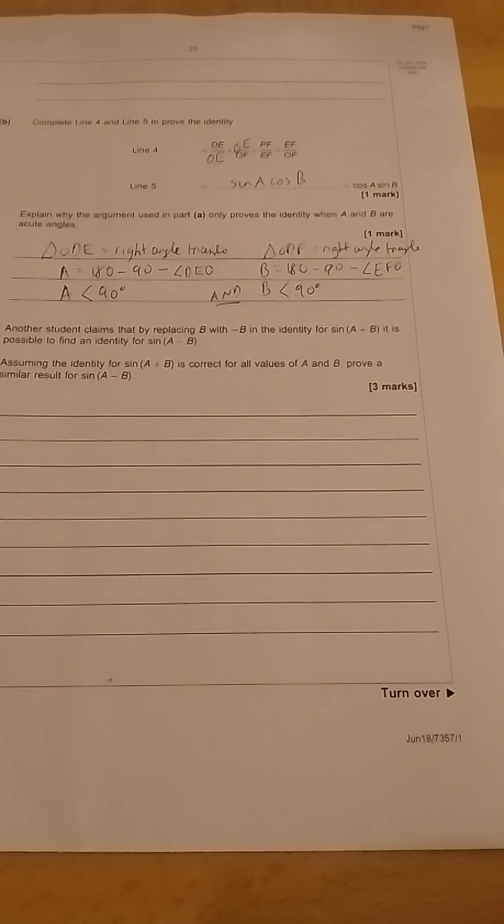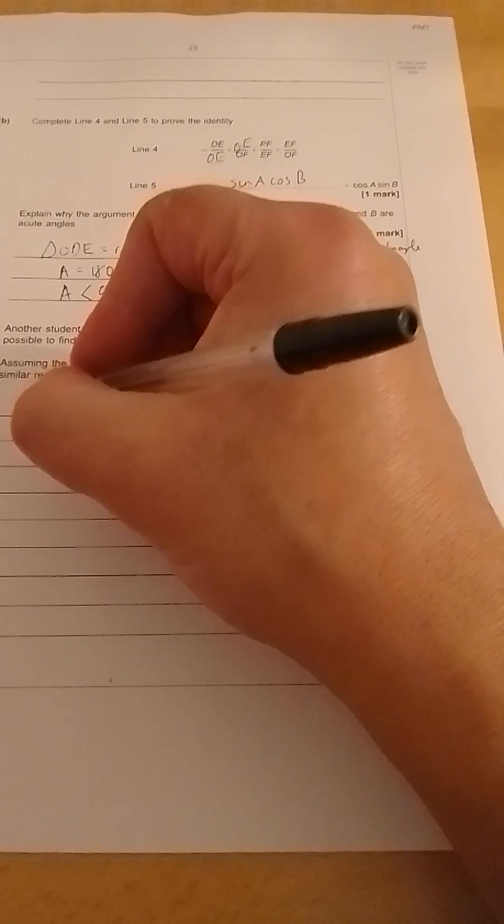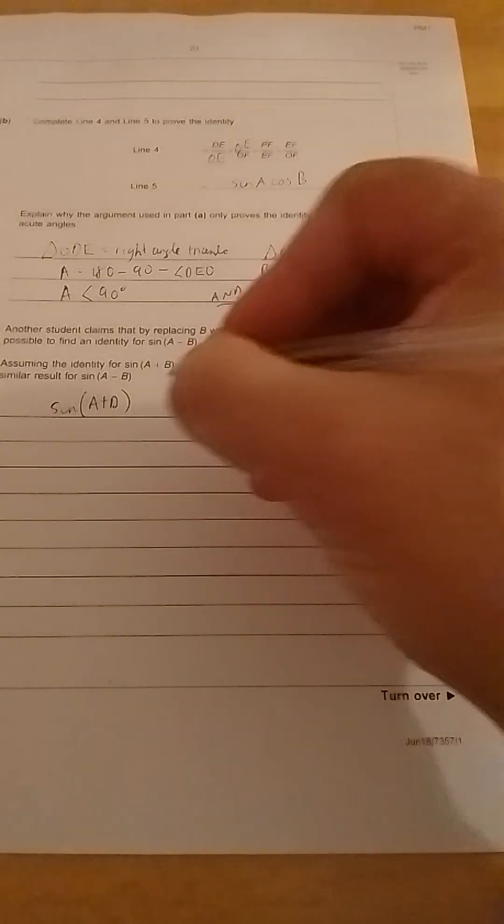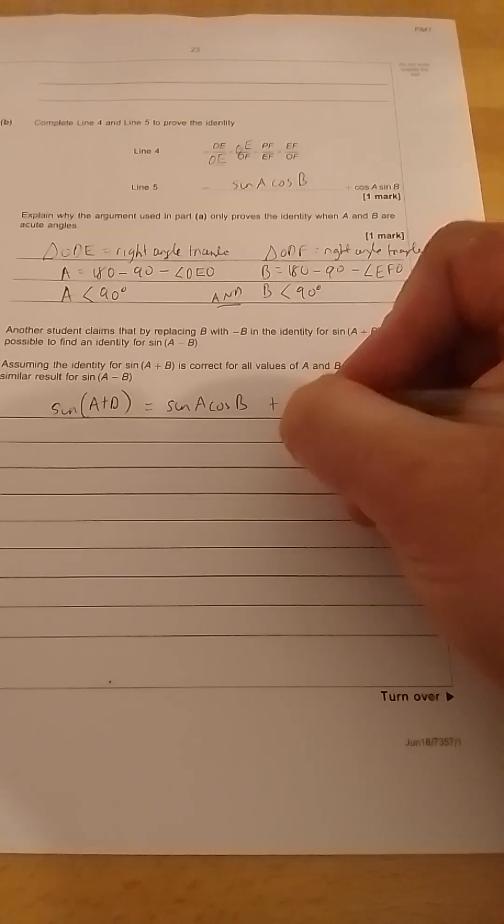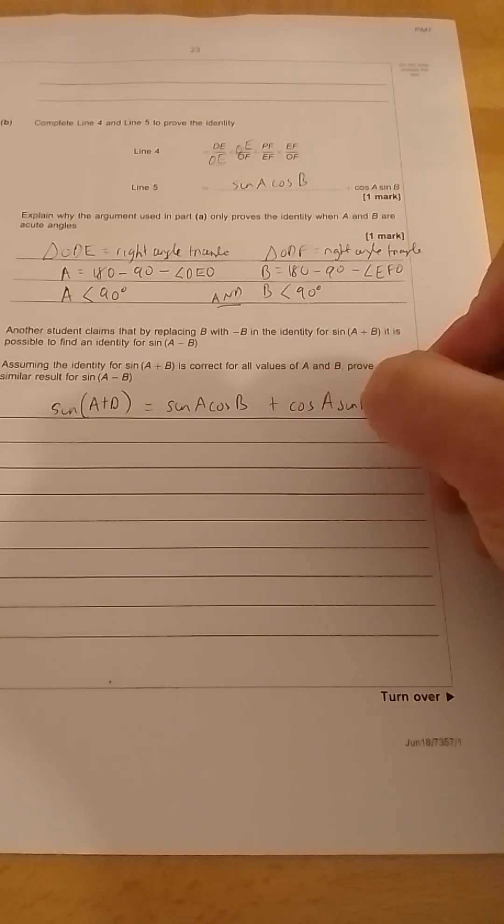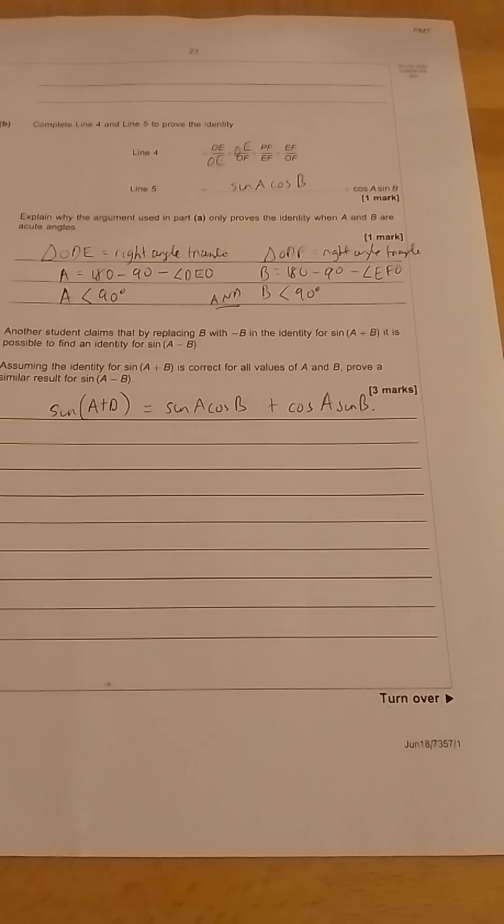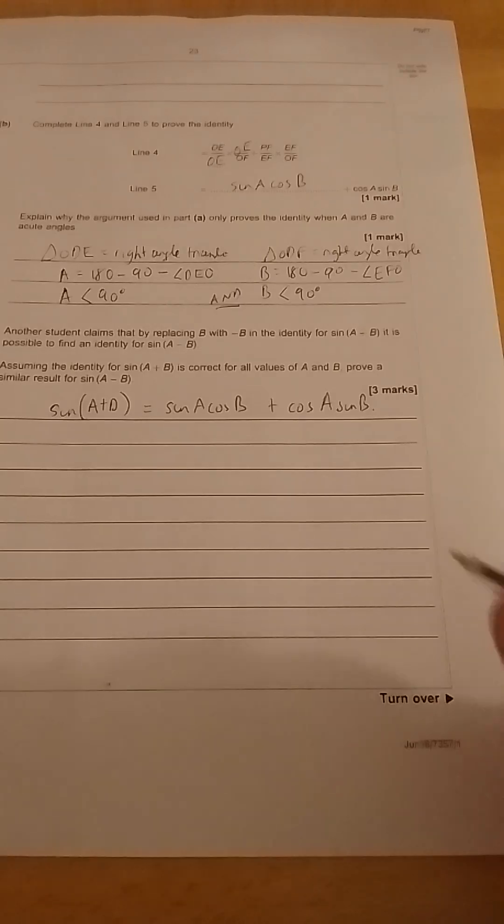Last part: a student, another student claims that by replacing B with minus B in the identity for sin(A + B), it is possible to find the identity for sin(A - B). Assuming the identity for sin(A + B) is correct for all values of A and B, prove a similar result for sin(A - B). So if the identity for sin(A + B), which of course we've just proven for acute angles, is sin A cos B plus cos A sin B, if we take their assumption that it works for all angles, we could substitute minus B for plus B in each case.